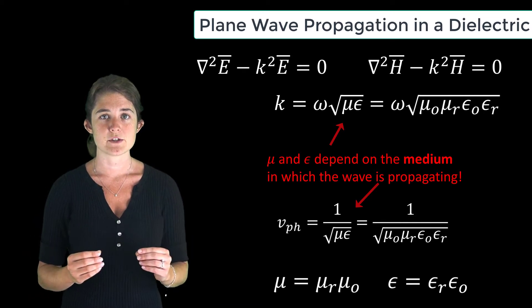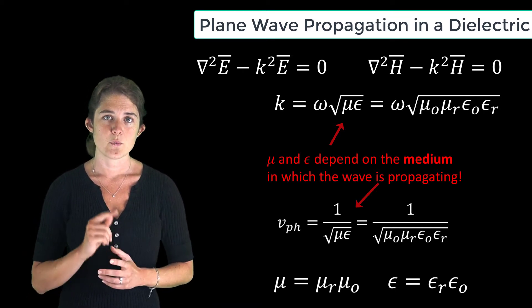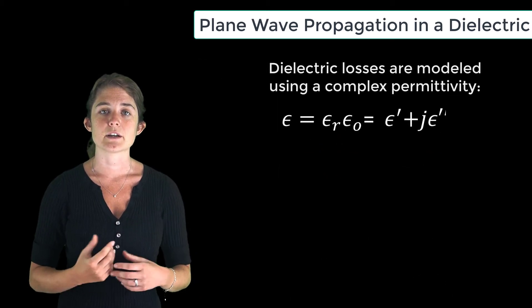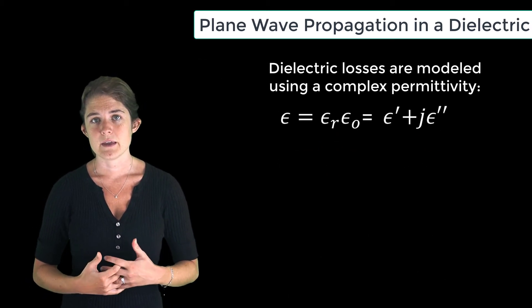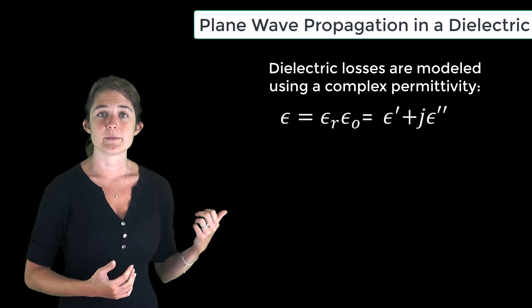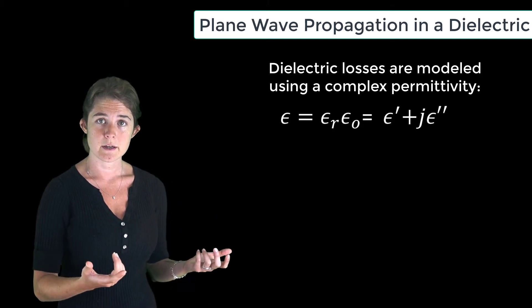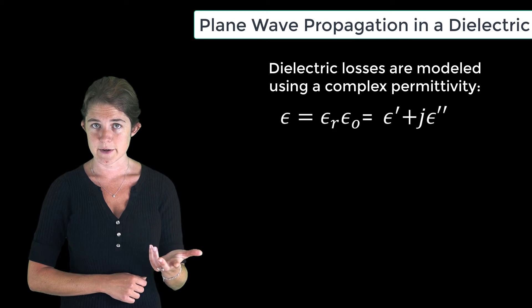Suppose the wave is traveling in a lossy dielectric. We model dielectric losses using a complex permittivity. In this case, we let epsilon equal epsilon prime, a real part, plus j epsilon double prime, an imaginary part.